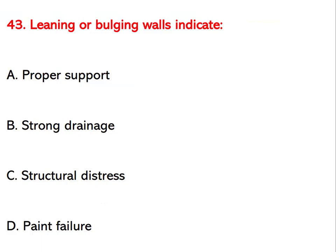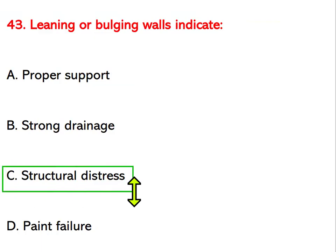Leaning or bulging wall indicates which condition? Options are proper support, strong drainage, structural distress, or paint failure. The right answer is structural distress.